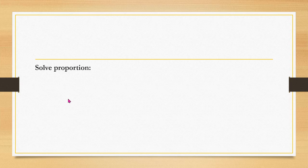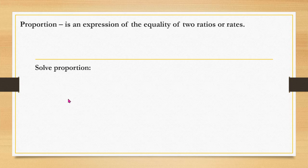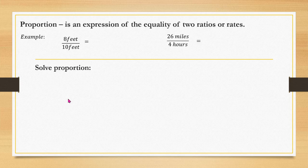Next, let's talk about solving proportions, but first let's define what a proportion is. A proportion is an expression of the equality of two ratios or rates. For example, 26 miles over 4 hours is proportional to 13 miles over 2 hours, and 8 feet to 10 feet is proportional to 4 feet to 5 feet.